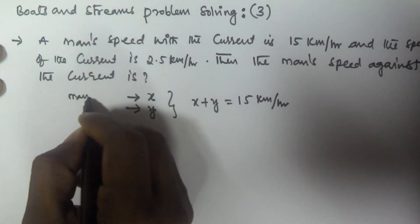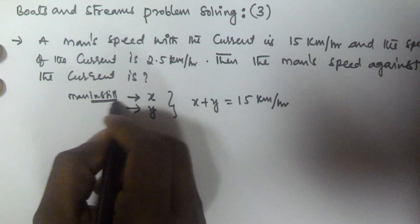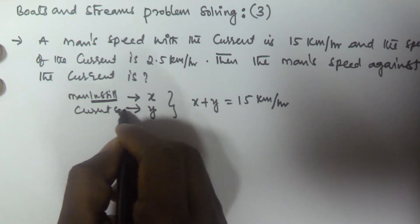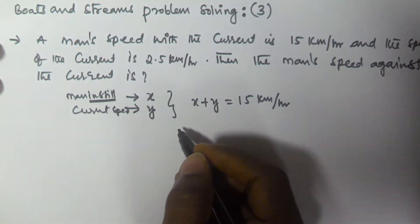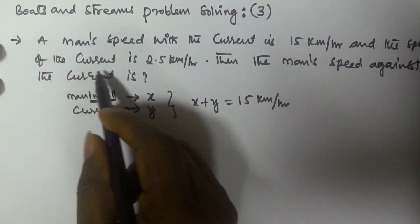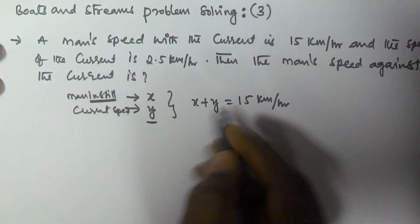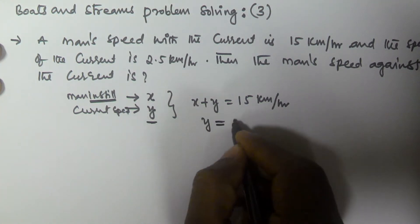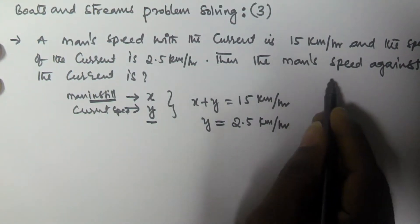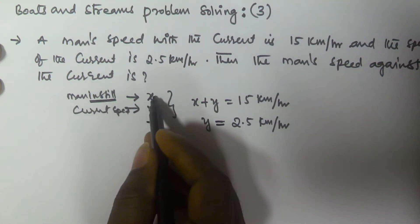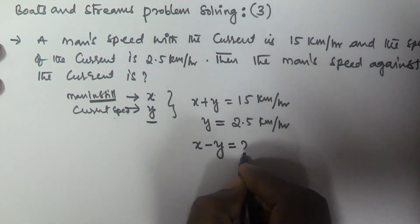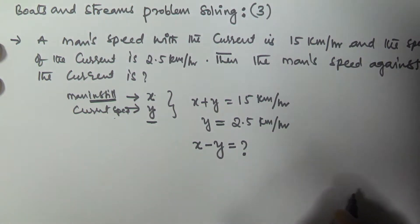then the man's speed with the current is x plus y, equal to 15 kmph. The current speed y is given as 2.5 kmph. We have to find the man's speed against the current, which is given by x minus y.